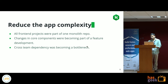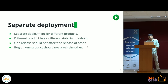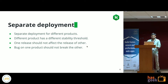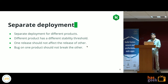Another reason was that we wanted separate deployment for all our products. We have HackerRank for Community, HackerRank for Enterprise, Candidate, CodePair, and a few more. All of them have different stability thresholds — basically, how stable we need to keep a particular product differs across products.